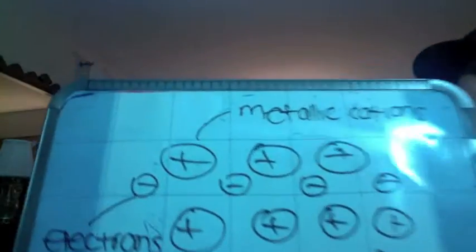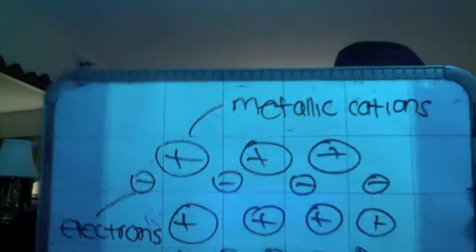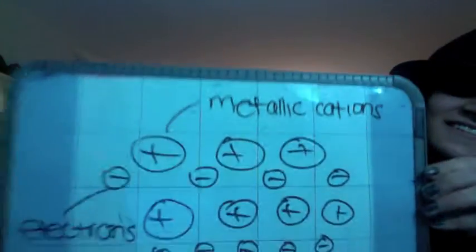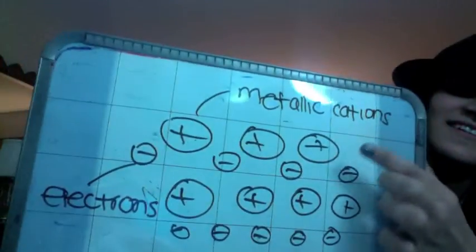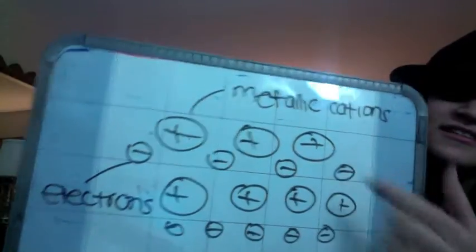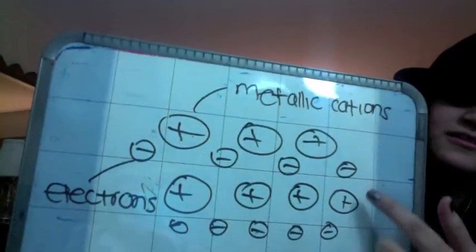So this is what it looks like. These are metallic cations, and these are the electrons — they just kind of float around each other.